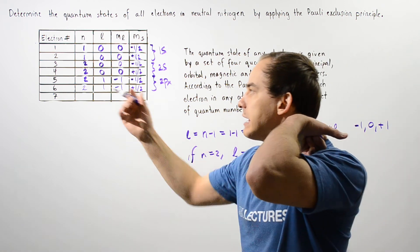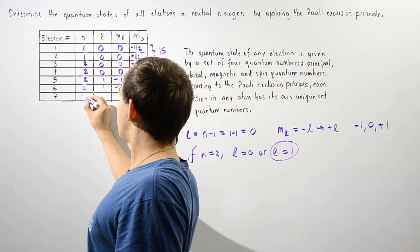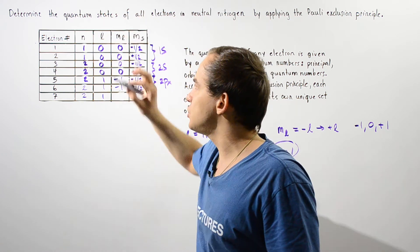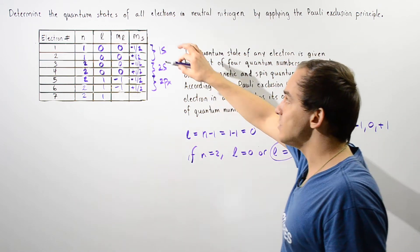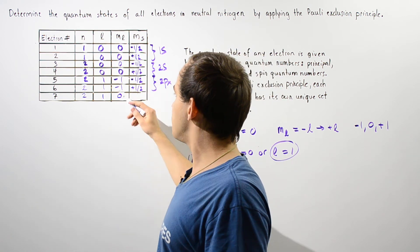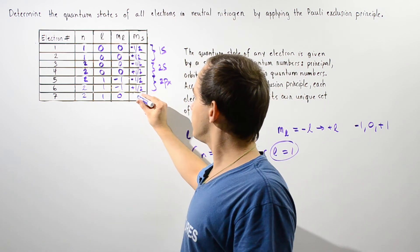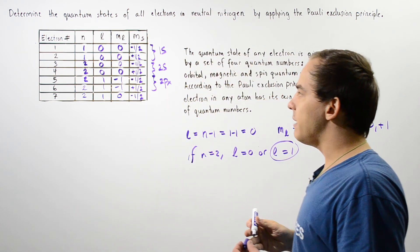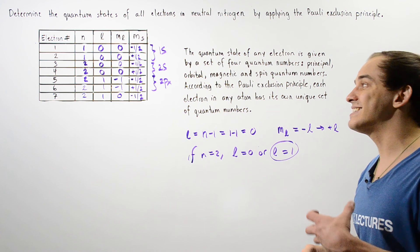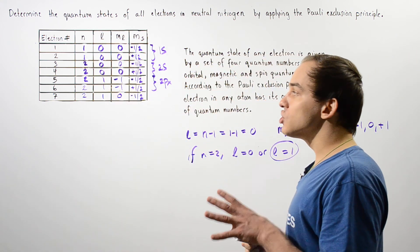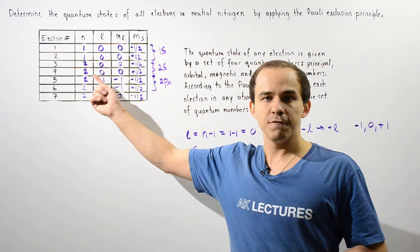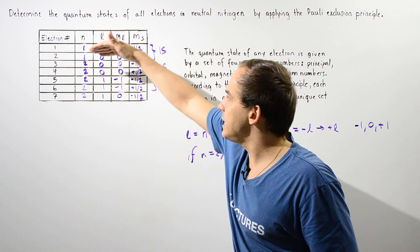Finally, we have the seventh and final electron. It also has n equals 2 and L equals 1, but the orientation of L changes — determined by the magnetic quantum number. This time ML equals 0, which is a completely new orbital, and we begin with MS equals negative one-half. By the Pauli exclusion principle, every single one of the seven electrons within the neutral nitrogen atom has its own unique set of four quantum numbers.